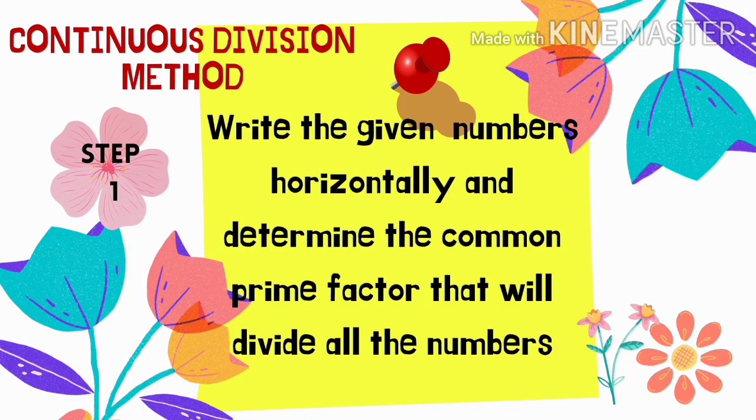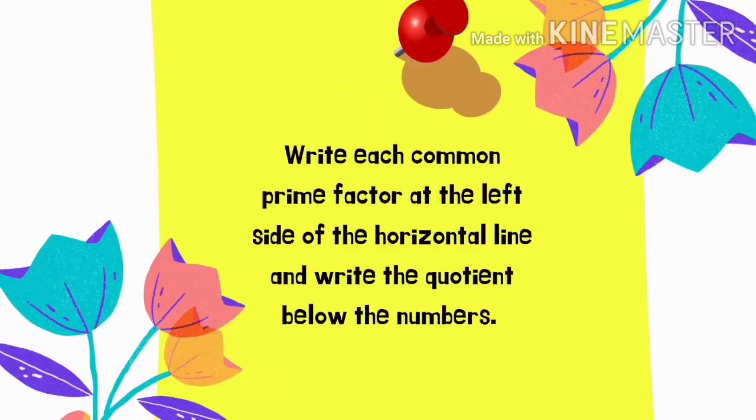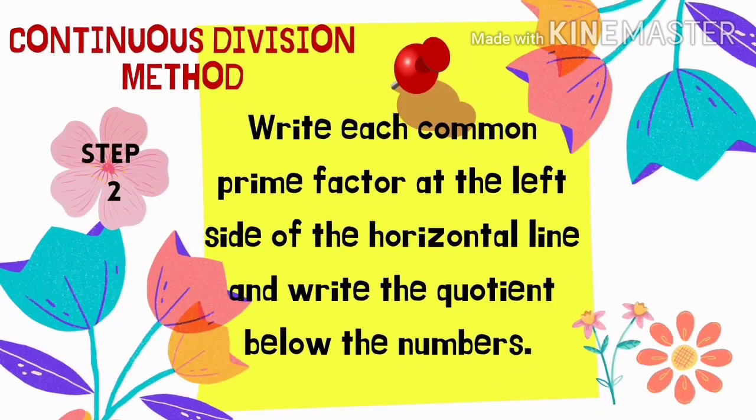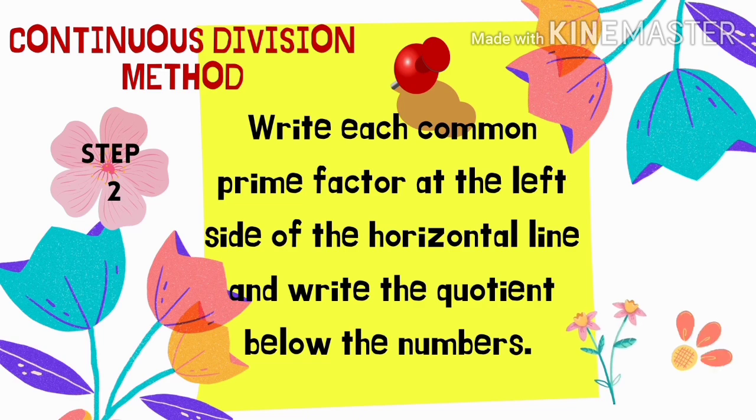So here are the steps that we need to follow. Step 1: Write the given numbers horizontally and determine the common prime factor that will divide all the numbers. Then, write each common prime factor at the left side of the horizontal line and write the quotient below the numbers.